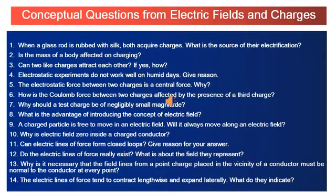For example, the force between two charges located at some distance apart in water is about one eighty-eighth of the force between them when separated by the same distance in air. This is because the absolute permittivity of water is about 80 times greater than the absolute permittivity of air or free space. According to Coulomb's law, the force between two point charges q1 and q2 placed in vacuum at a distance r is: F = (1/4πε₀) × q1q2/r².